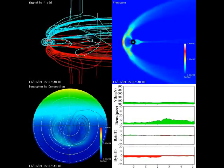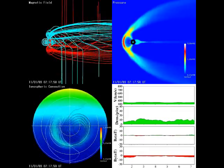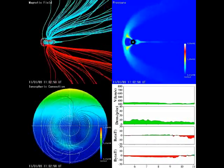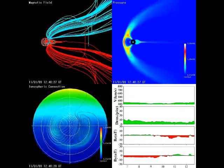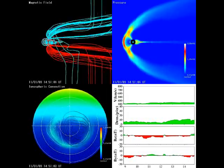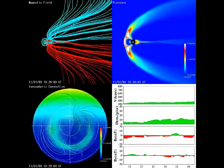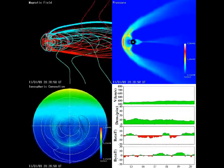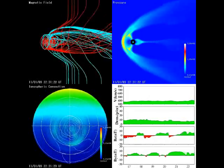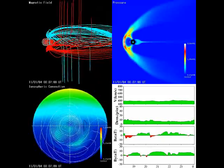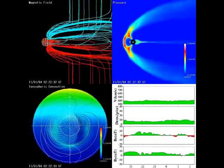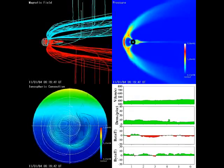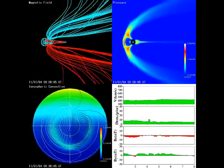NASA's five THEMIS spacecraft have discovered a breach in Earth's magnetic field ten times larger than anything previously thought to exist. Solar wind can flow in through the opening to load up the magnetosphere for powerful geomagnetic storms. But the breach itself is not the biggest surprise. Researchers are even more amazed at the strange and unexpected way it forms, overturning long-held ideas of space physics. At first I couldn't believe it, says THEMIS project scientist David Sibeck of the Goddard Space Flight Center. This finding fundamentally alters our understanding of the solar wind magnetosphere interaction. The magnetosphere is a bubble of magnetism that surrounds Earth and protects us from solar wind. Exploring the bubble is a key goal of the THEMIS mission, launched in February 2007.